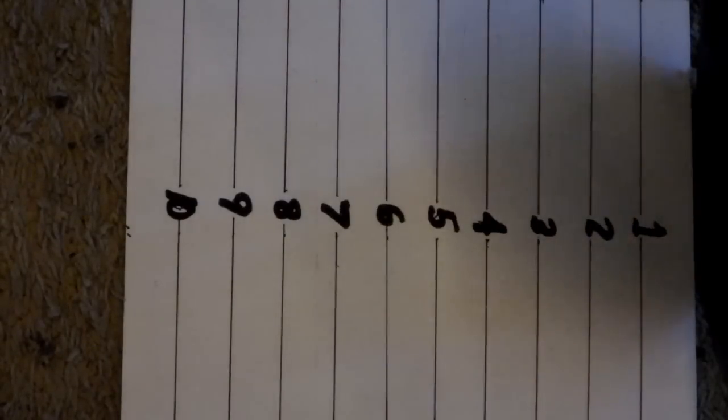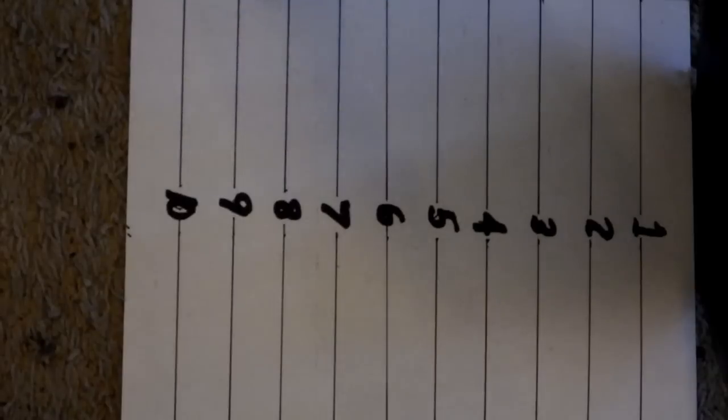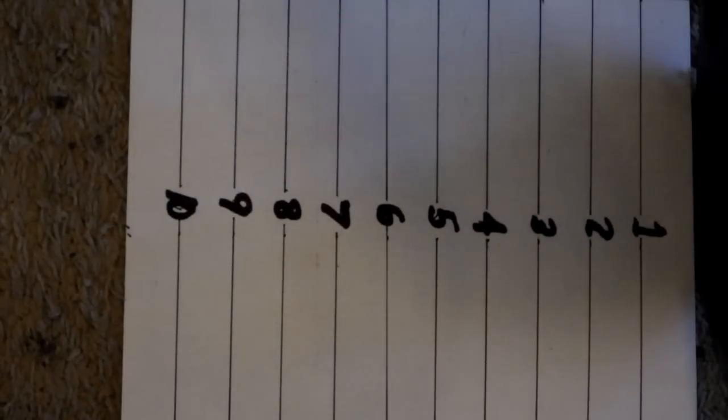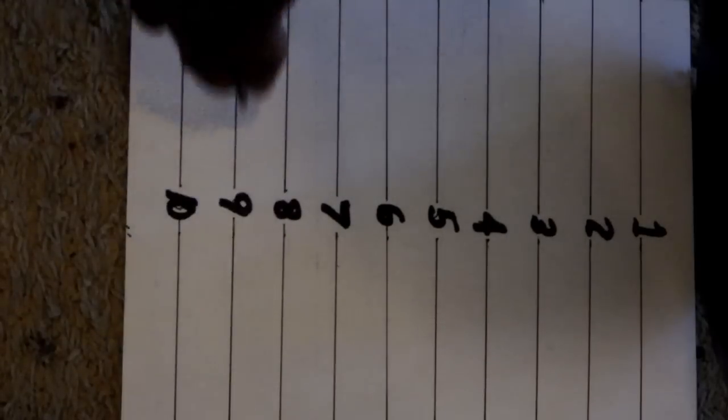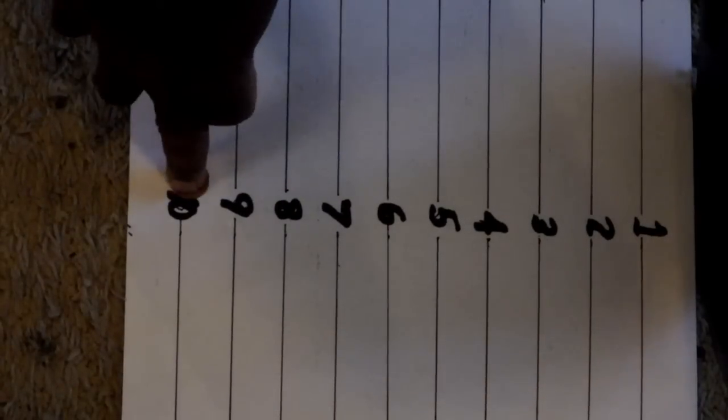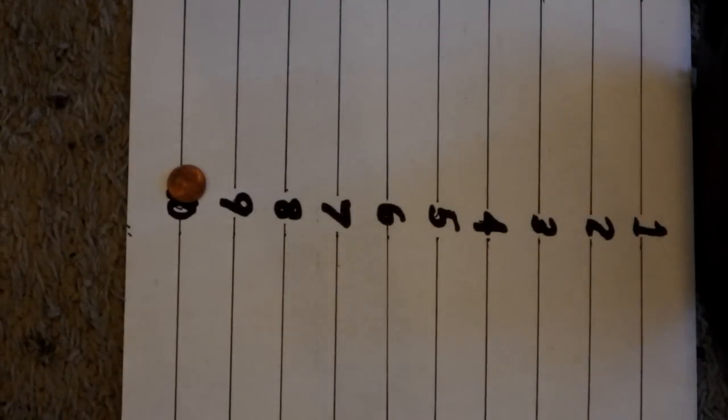I'm going to do the same thing I did before in reverse denominational order. Going first with the penny. Two, three, four, five, six, seven, eight, nine. Still a pretty good signal at nine. Ten. It's pretty close, so let's put about nine and a half with the penny.